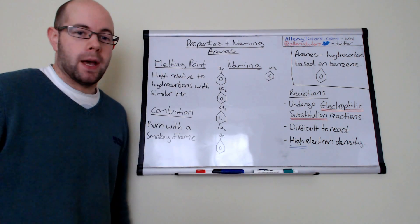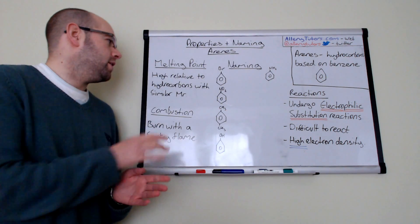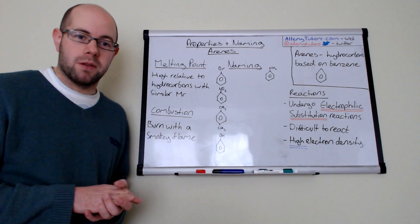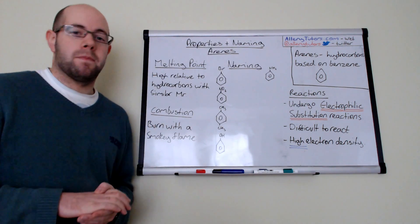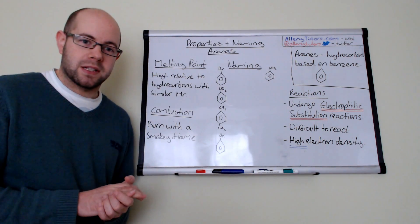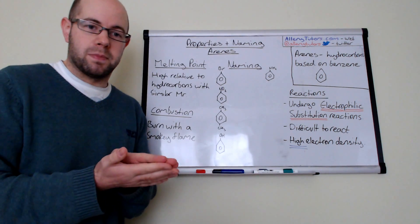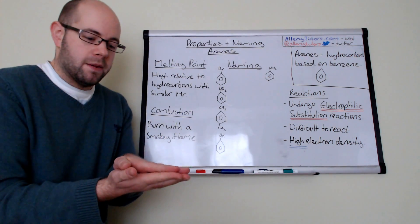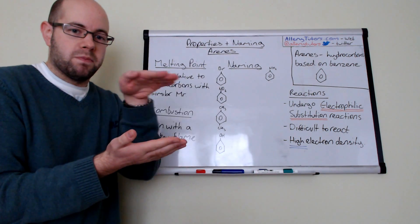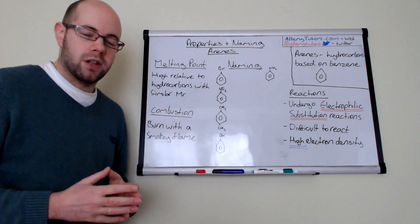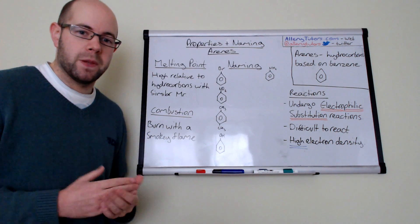We're going to start with melting point first. Melting points of benzene is actually slightly higher than hydrocarbons with a similar MR, for example, something like hexane. The reason why is because benzene is actually a very flat molecule. It's planar and it can stack or get really close and layer up loads of benzene molecules. Because they can get very close to each other, you get a high van der Waals force, so therefore the melting point increases.